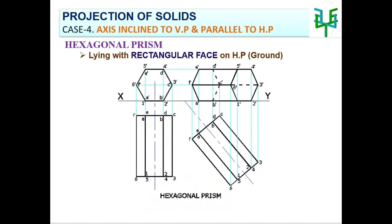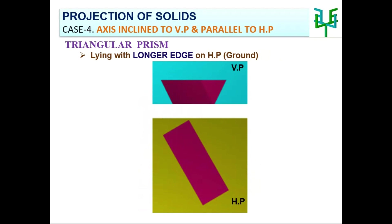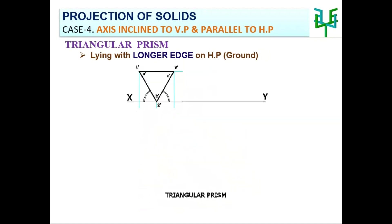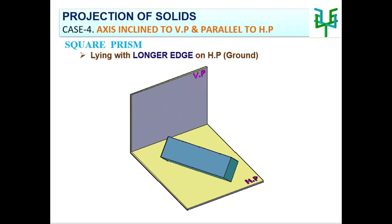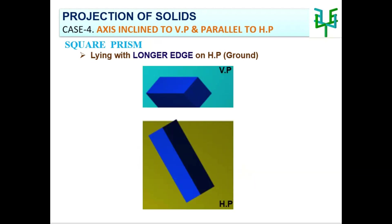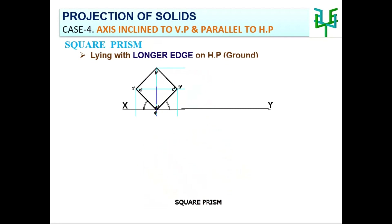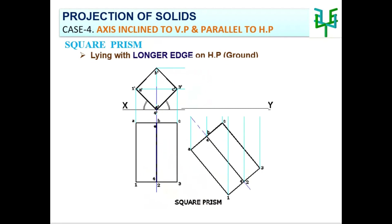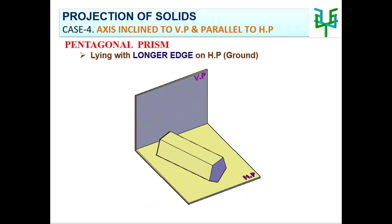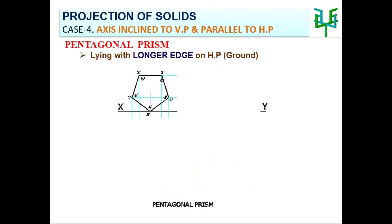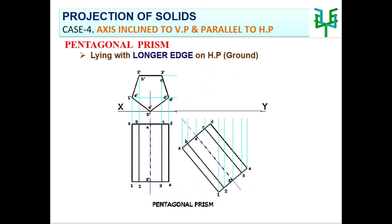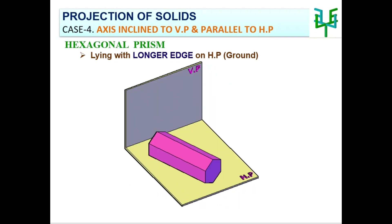The second possibility for a prism is, with axis inclined to VP and parallel to HP, lying with its long ridge. Triangular prism lying with its long ridge, square prism, pentagonal prism, hexagonal prism.